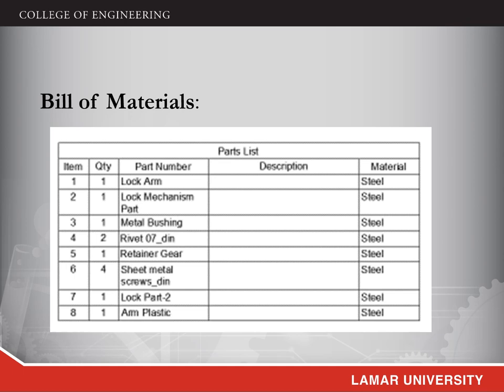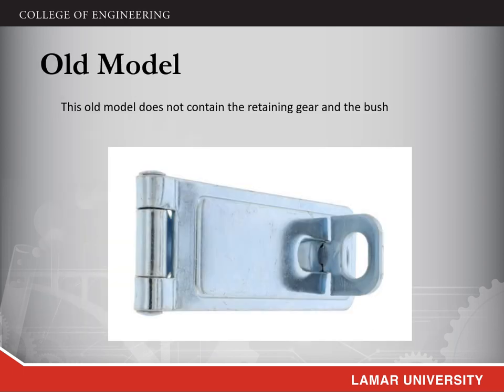From the bill of materials, we can see clearly that we will be using one lock arm, one lock mechanism part, one metal bushing, two rivets, four sheet metal screws, and one arm plastic. These are the things we will be using for developing the latch lock. From the picture you can see that the old model doesn't have any retaining gear or bush — it's just a simple locking mechanism.